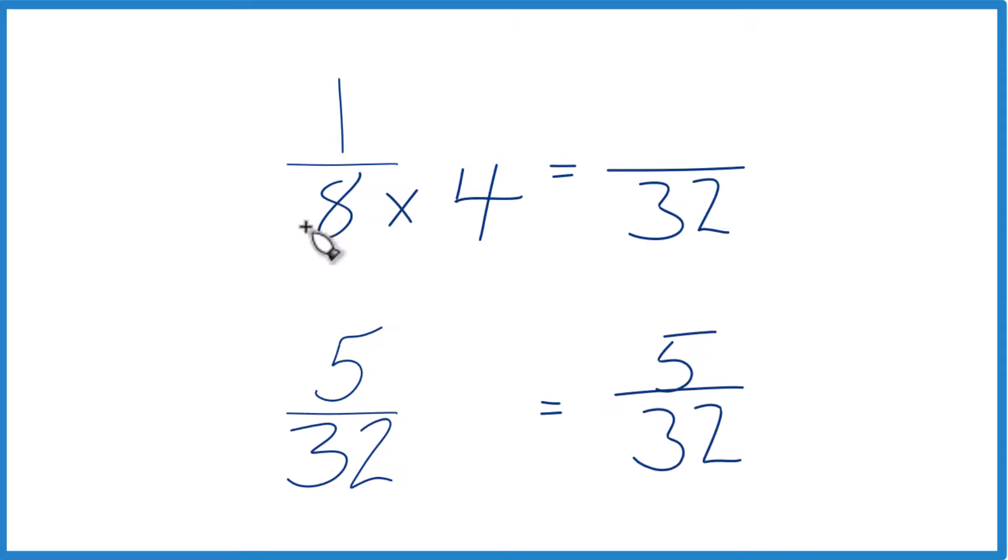And we can't just multiply the denominator by 4, we have to multiply the numerator by 4 as well. 4 over 4, that's 1, so we're just multiplying by 1, we don't change the value.